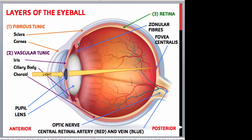The ciliary body is the anterior continuation of the choroid, made up of ciliary muscle. It gives attachment to the suspensory ligaments, also known as the zonular fibres, which at the other end are attached to the capsule enclosing the lens of the eye. It is the contraction and relaxation of the ciliary muscle that changes the thickness of the lens, which then bends or refracts light entering the eye to focus the image onto the retina. The ciliary body, like the choroid, appears dark brown because it contains melanin-producing melanocytes.